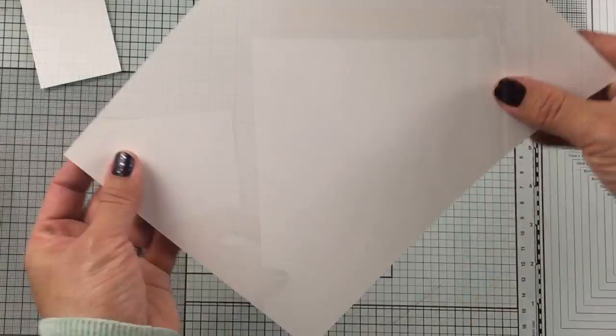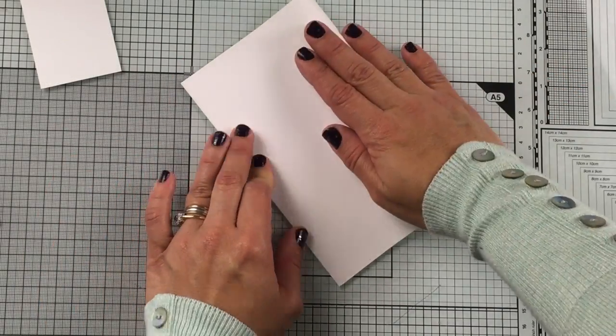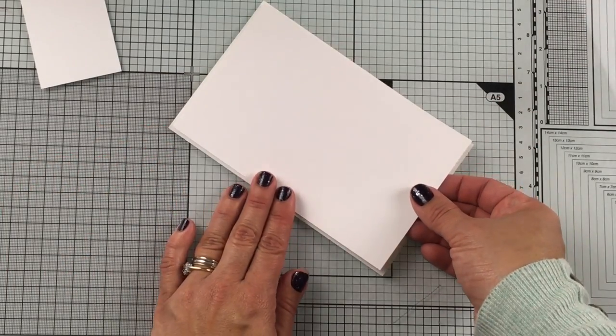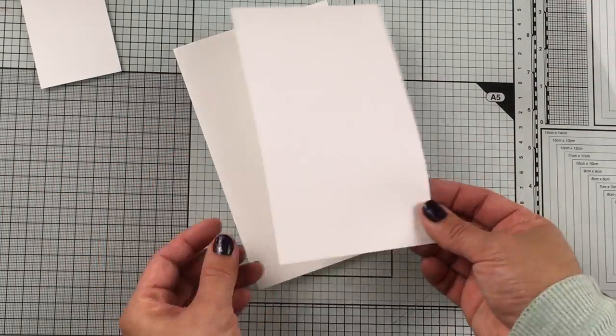This is going to be the card base and I'm using here regular smooth cardstock, this is 210 grams and it's good for stamping.